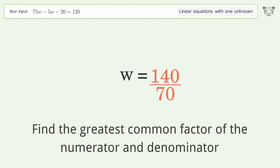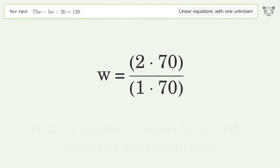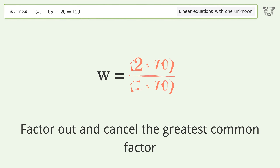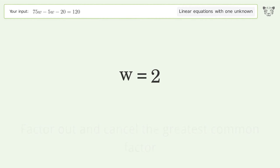Find the greatest common factor of the numerator and denominator. Factor out and cancel the greatest common factor. The final result is w equals 2.